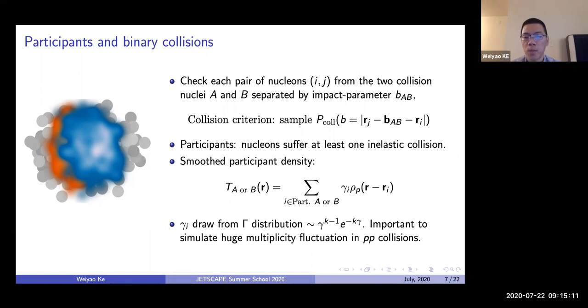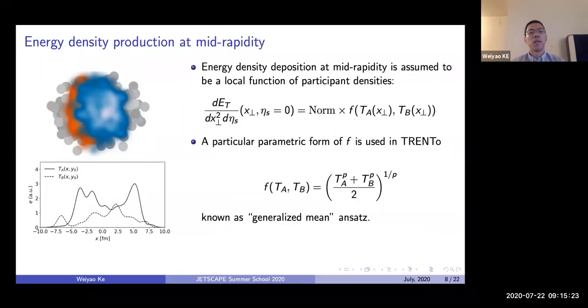Its importance—we will come back to its importance later. But currently, I can tell you that we have to include such a fluctuation to mimic the huge multiplicity fluctuation when you do proton-proton collisions.